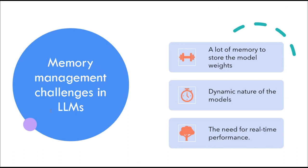There are a number of challenges associated with memory management in LLMs. These include the size of the model — LLMs have billions or even trillions of parameters, requiring a lot of memory to store model weights and activations. Another challenge is the dynamic nature of the model: LLMs are trained on massive datasets of text and code, so they are consistently changing as they are exposed to new data, making memory usage difficult to manage. There is also the need for real-time performance, which puts additional constraints on memory management.